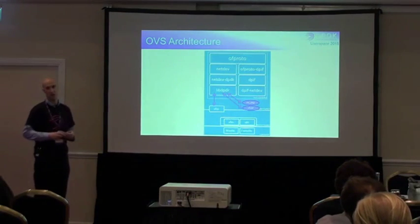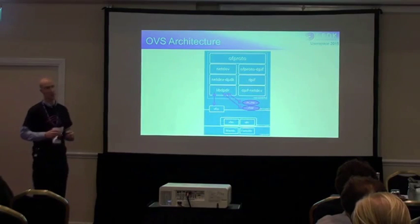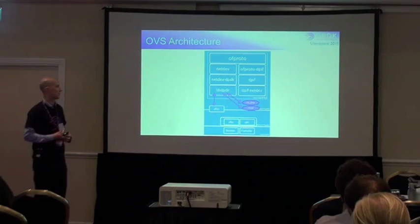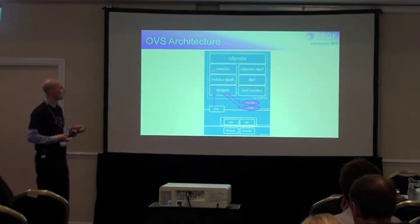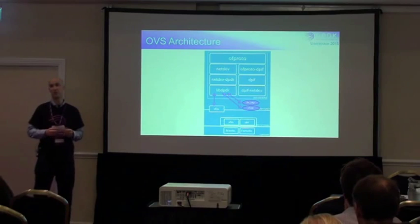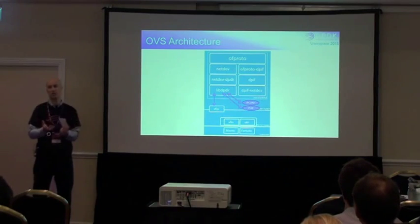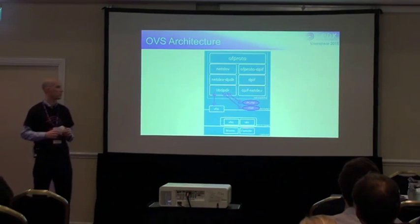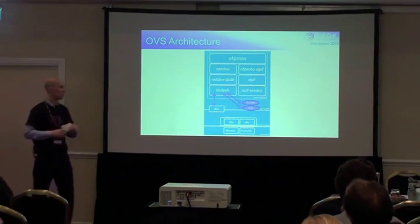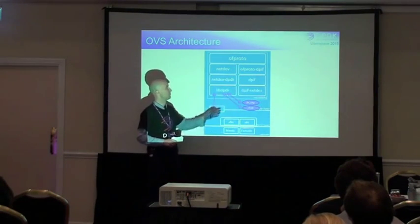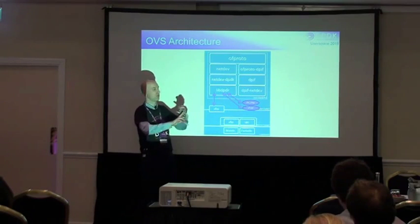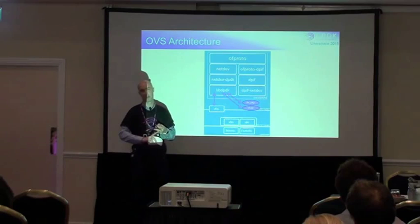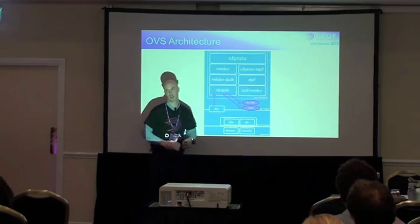Looking at the architecture in more detail, there are three main structural components in OVS: OFProto, NetDev, and DPIF. NetDev represents network devices. DPIF represents the Open vSwitch data path — basically a wildcard ACL table with ports associated with it. OFProto represents an OpenFlow switch, using NetDev and DPIF to represent the data path as an OpenFlow switch. Your management interface — either OpenFlow or OVSDB — can control and configure the switch in many different ways.